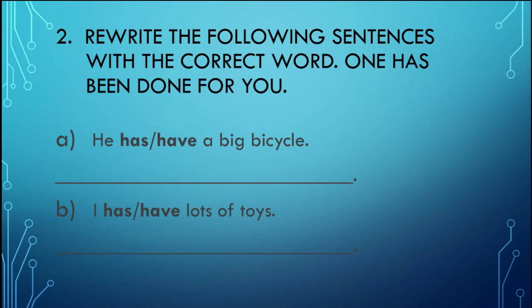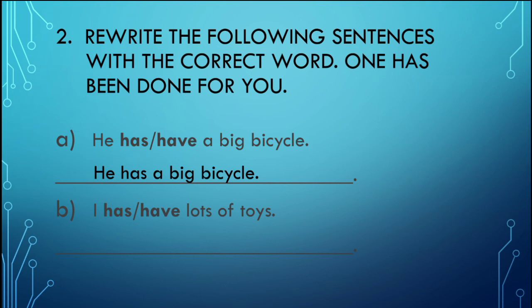Students, let's solve Question 2. You must rewrite the following sentences with the correct word — one has been done for you. We have to choose 'has,' 'have,' or 'had.' For example: 'He has a big bicycle.' We use 'has' because 'he' is singular.